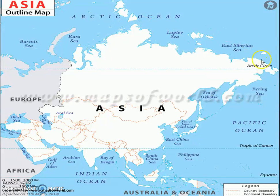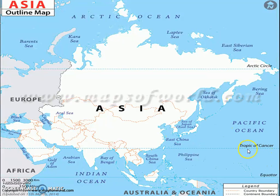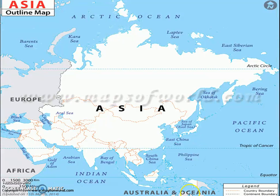If you observe the map of Asia, you will find that this continent is surrounded by water. On the northern side you will find the Arctic Ocean, on the southern side the Indian Ocean, and on the eastern side the Pacific Ocean. Apart from that, there are many different seas as well. One of the most prominent ones in the context of India is the Bay of Bengal and the Arabian Sea. If you follow current affairs and read the newspaper daily, you will also be familiar with the South China Sea.